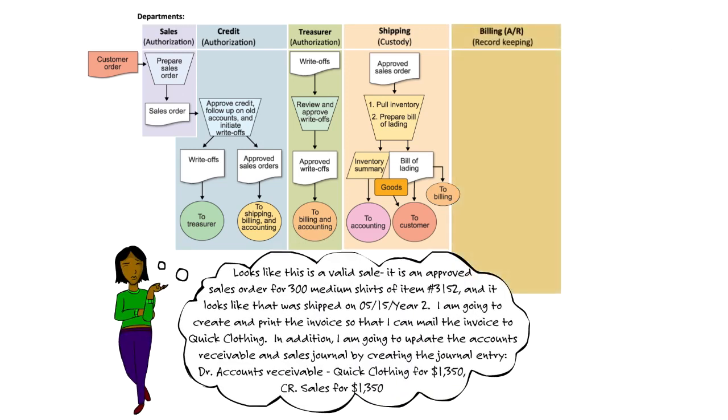Looks like this is a valid sale. It's an approved sale order for 300 medium shirts of item number 3152. And it looks like that was shipped on 5/15, year 2. I'm going to create and print the invoice so that I can mail the invoice to Quick Clothing.